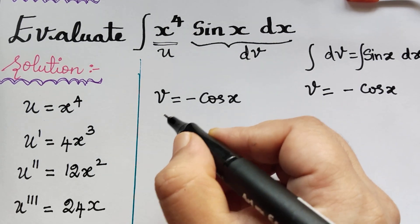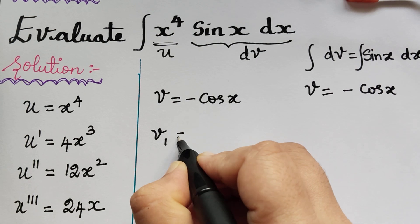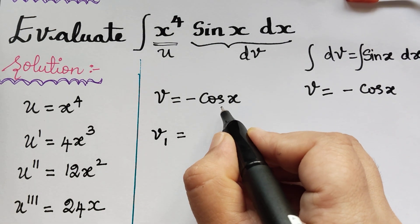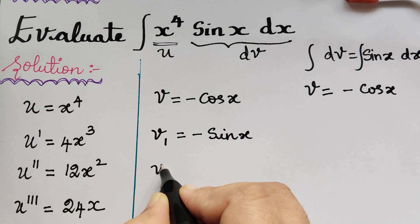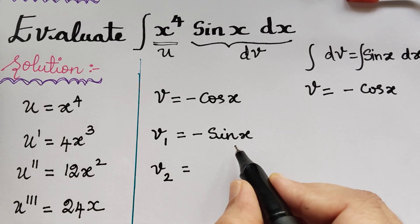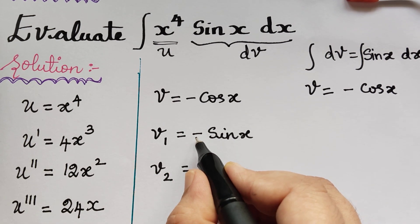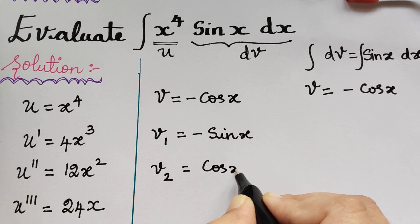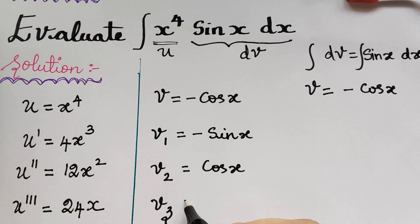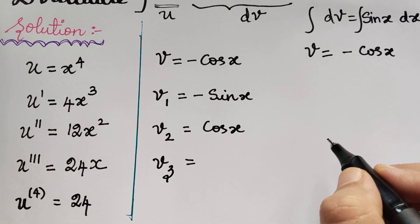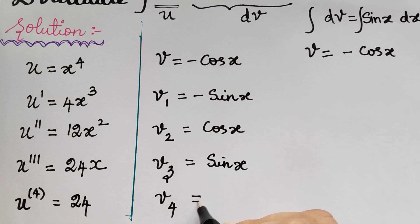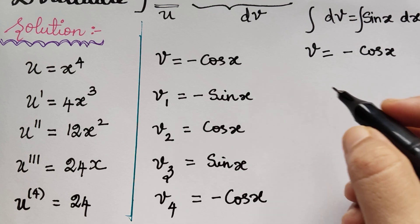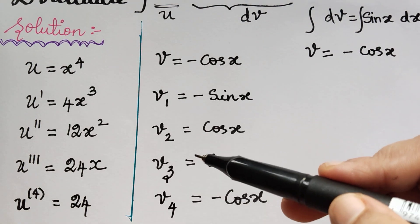From v we obtain v1, which is the integration of v. The integration of minus cos x dx gives minus sin x. Next, v2 is the integration of v1: integral of minus sin x is minus cos x, and minus times minus becomes plus, so v2 equals cos x. Further, v3 is the integration of v2: integral of cos x is sin x. Finally, v4 is the integration of v3: integral of sin x is minus cos x.